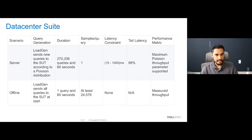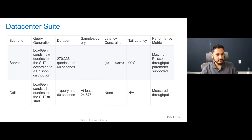In the offline scenario, it's essentially a batch processing setting where all data is immediately available and latency is unconstrained. The data is sent in a single query containing all input data to be processed, and the system is free to process the data in any order. The performance metric for the offline scenario is throughput — that is, samples per second — and different benchmarks have different kinds of samples.